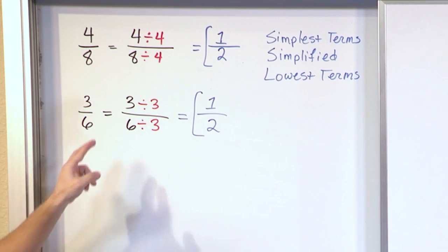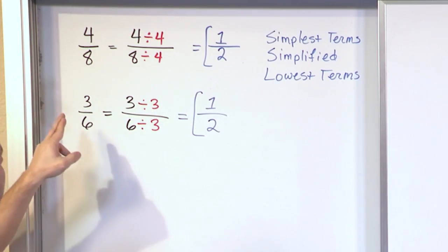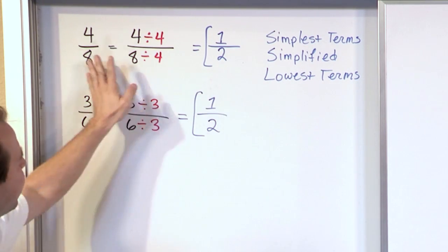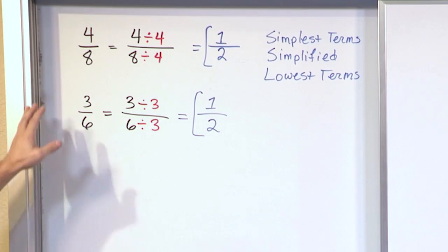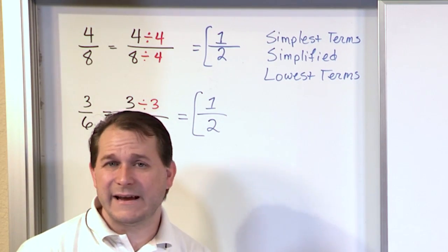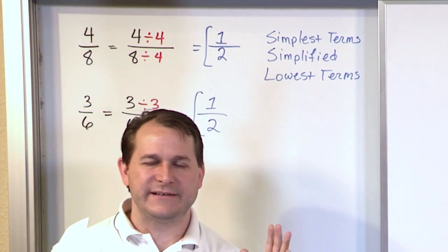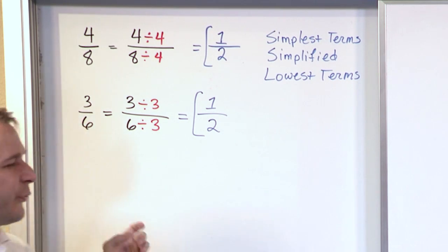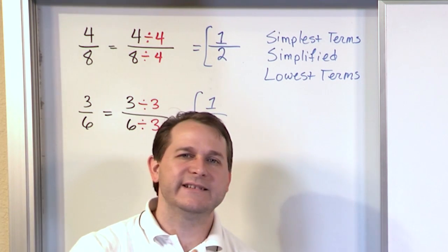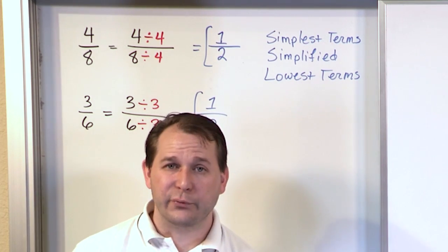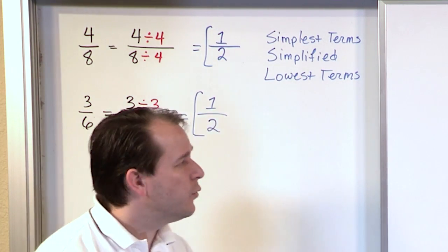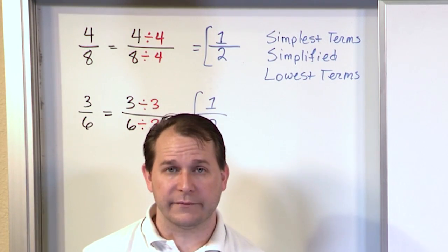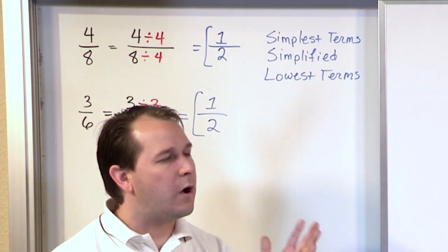Notice that both problems gave us one half as the answer. How can that be? What this tells us is that all of these fractions are basically the same thing. What does one half of a sandwich look like? You cut it in half. What about 3 sixths of a sandwich? If you cut it into 6 equal pieces but only eat 3 of them, that's half the sandwich — the same thing. And if you cut it into 8 pieces but only eat 4, you've still eaten half a sandwich.